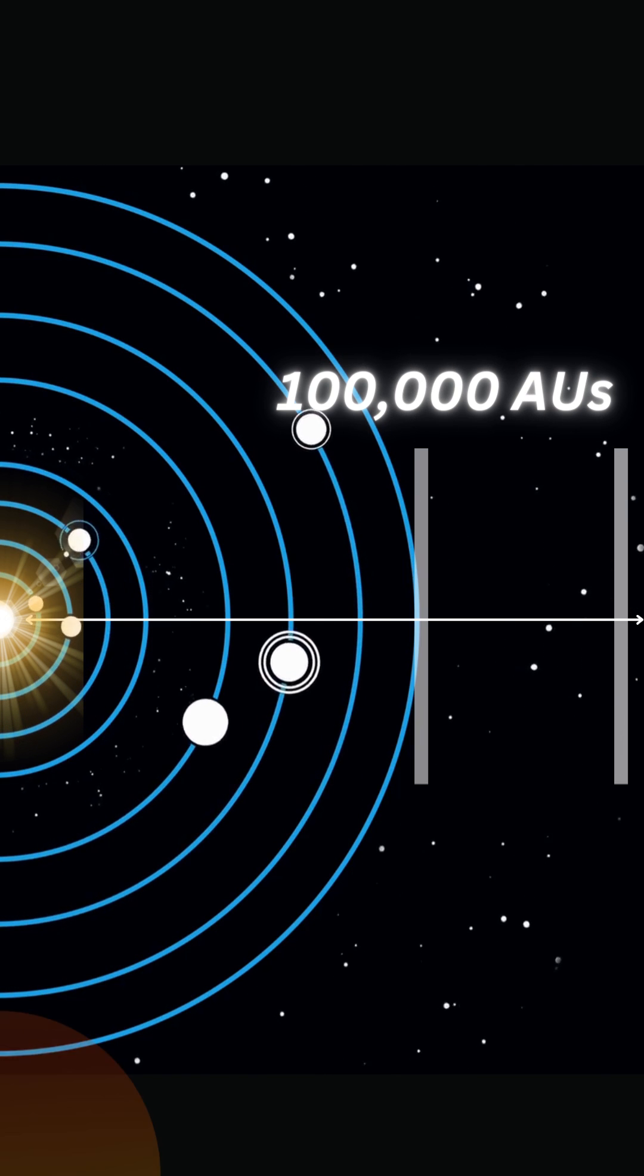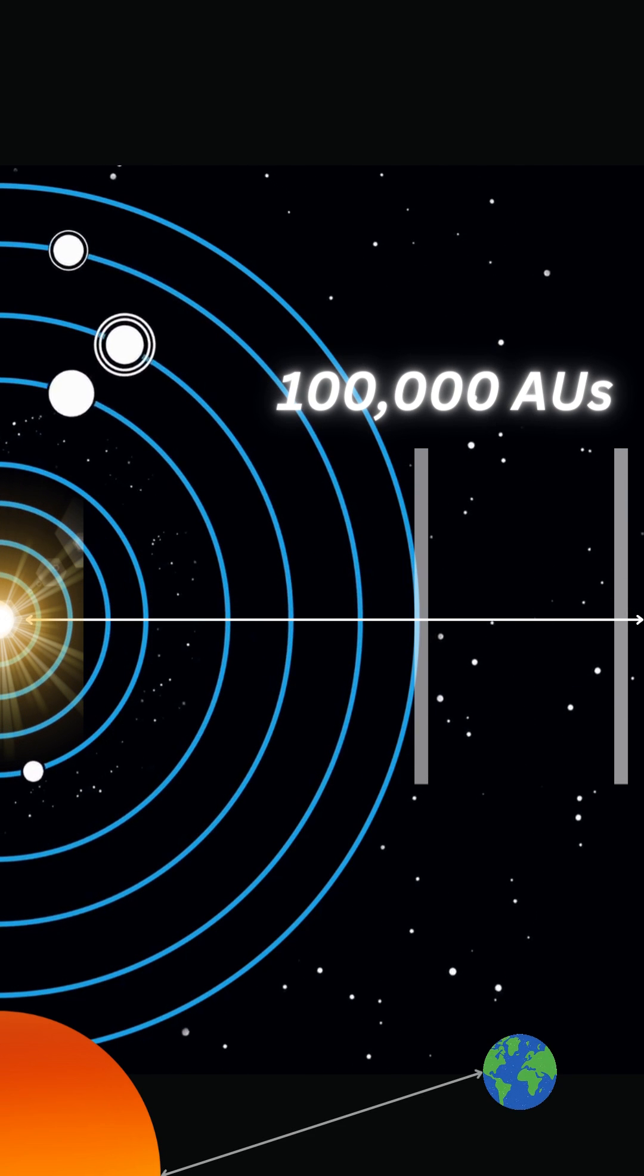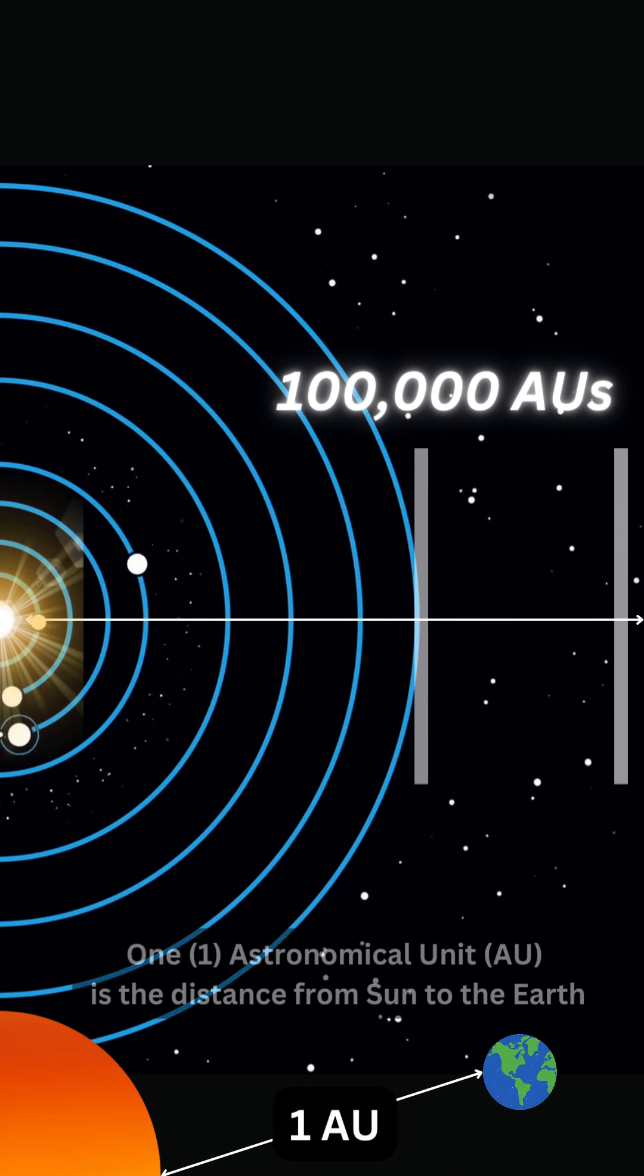To put it simply, it's the boundary where our sun's gravitational influence ends, marking the outer limits of our cosmic neighborhood.